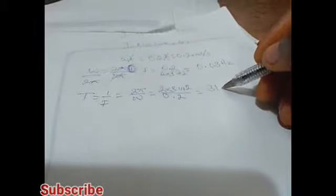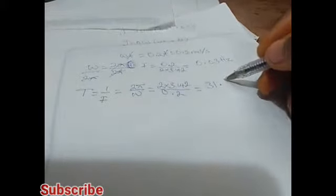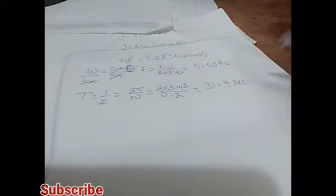Which is 2 times 3.142 over 0.2, which is equal to 31.4 seconds. So that's our period.